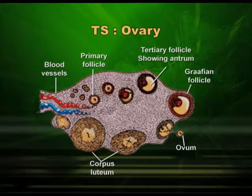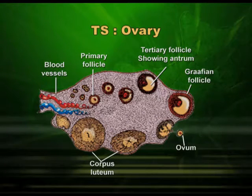Oogenesis is the formation of ova which takes place in the ovary. Ova will be formed by oogenesis through meiosis or reduction division, but the story of reduction division or formation of gamete is not the same way as it happened in case of spermatogenesis. In both cases gametes are formed, but the process is slightly different. In the ovary you can see the Graafian follicle, you can see ovulation taking place or ova coming out, and you can also see the corpus luteum, a functional corpus luteum.